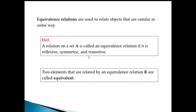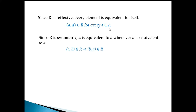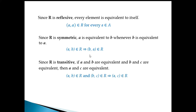For an equivalence relation, it must be reflexive, symmetric, and transitive. For reflexive: every element is equivalent to itself, meaning the ordered pair (a, a) belongs to R for every a in A. For symmetric: a is equivalent to b whenever b is equivalent to a, so if (a, b) belongs to R then (b, a) belongs to R. For transitive: if a and b are equivalent and b and c are equivalent, then a and c are equivalent.